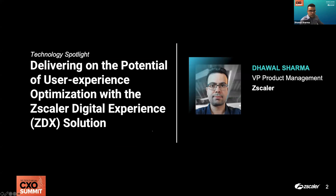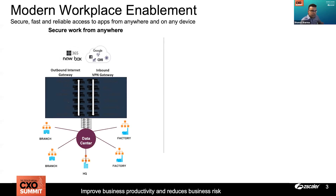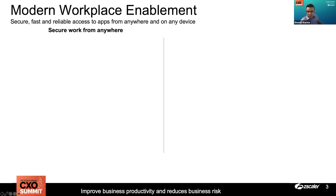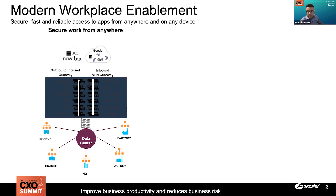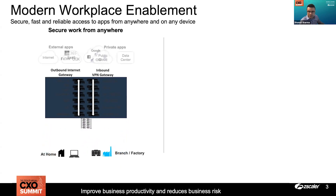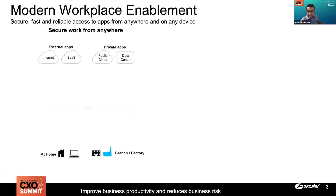When you think about digital experience, one of the key things we have built in Zscaler's solution area is modern workplace enablement, which essentially means aligned with the broader work-from-anywhere philosophy. The key goal here is to improve productivity and reduce business risk. Your employees are secured through Zscaler's Zero Trust Exchange — ZIA makes sure internet traffic is protected, and ZPA ensures employees connect to private applications securely.